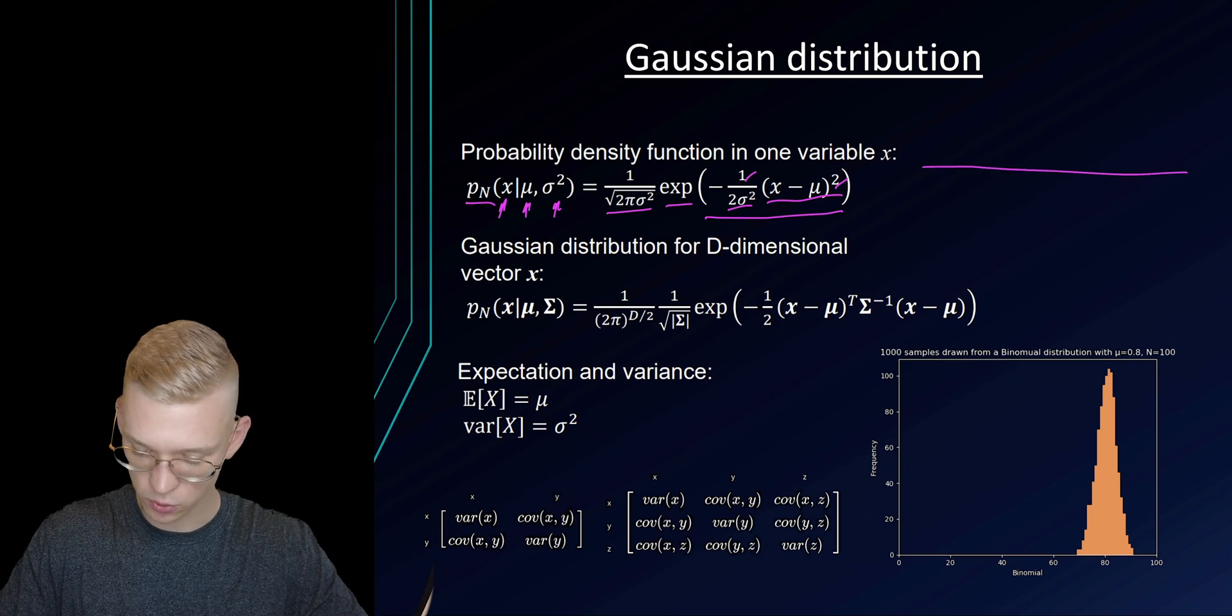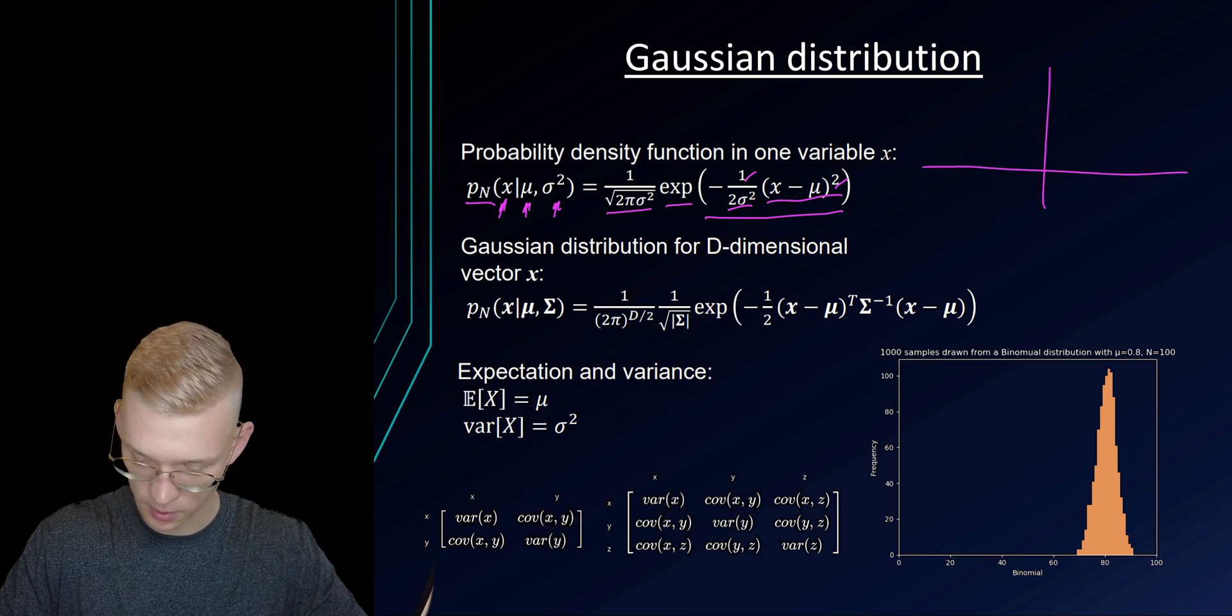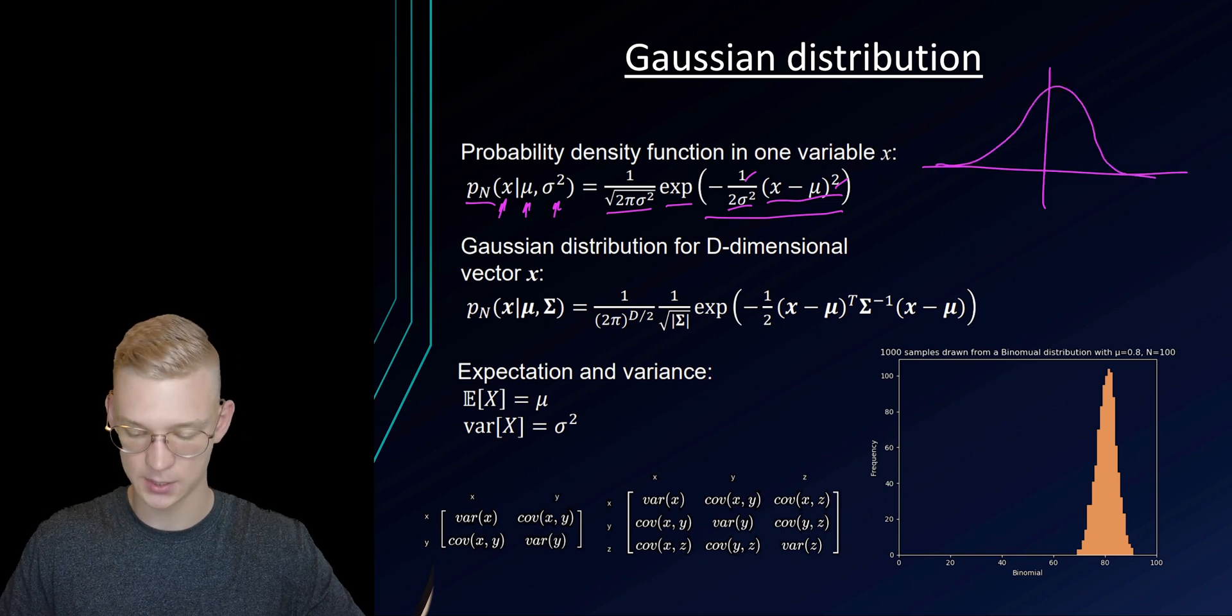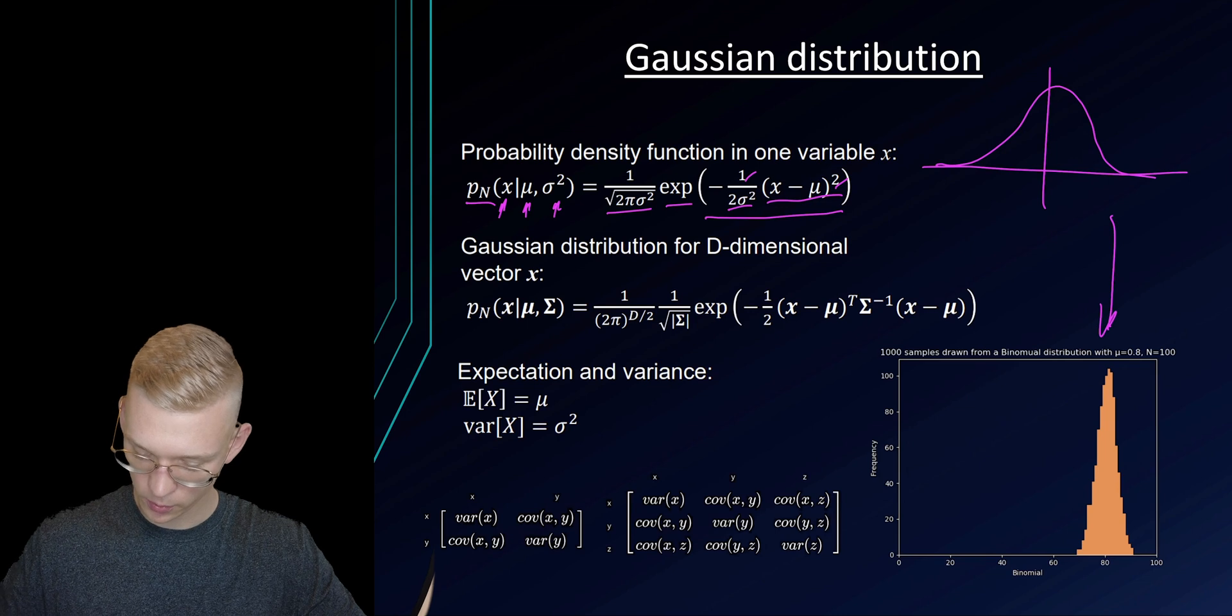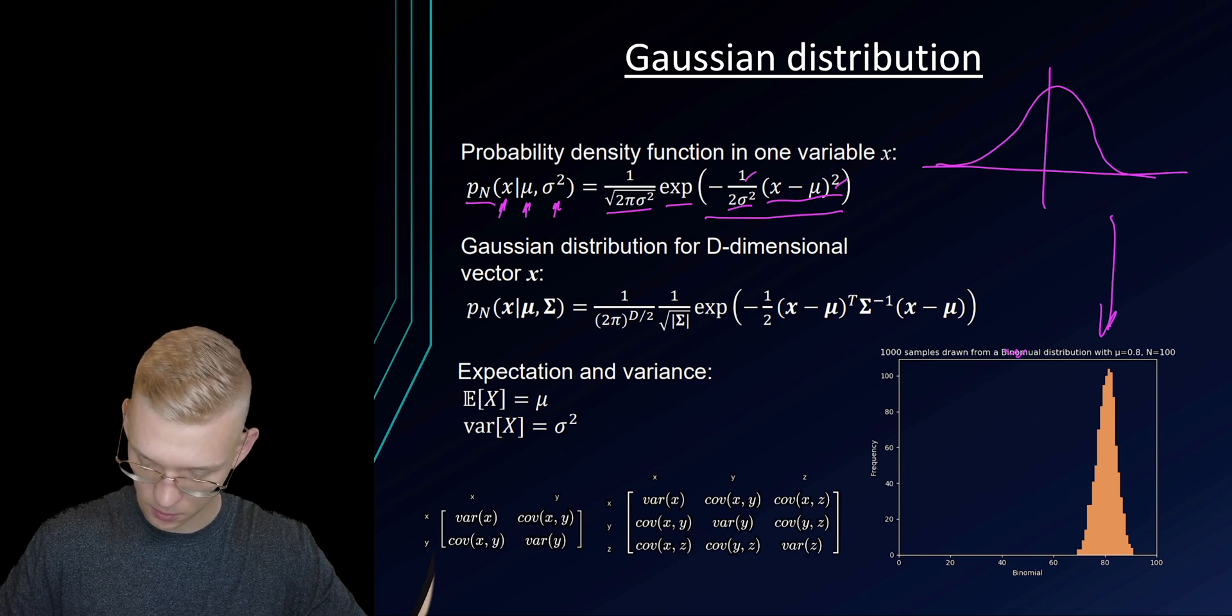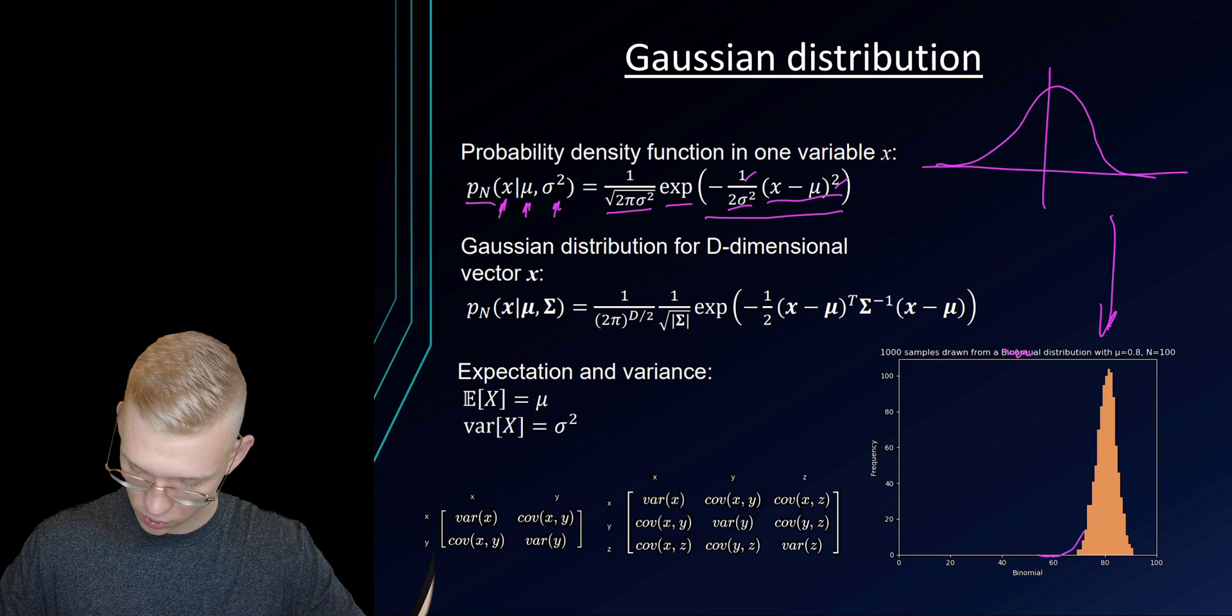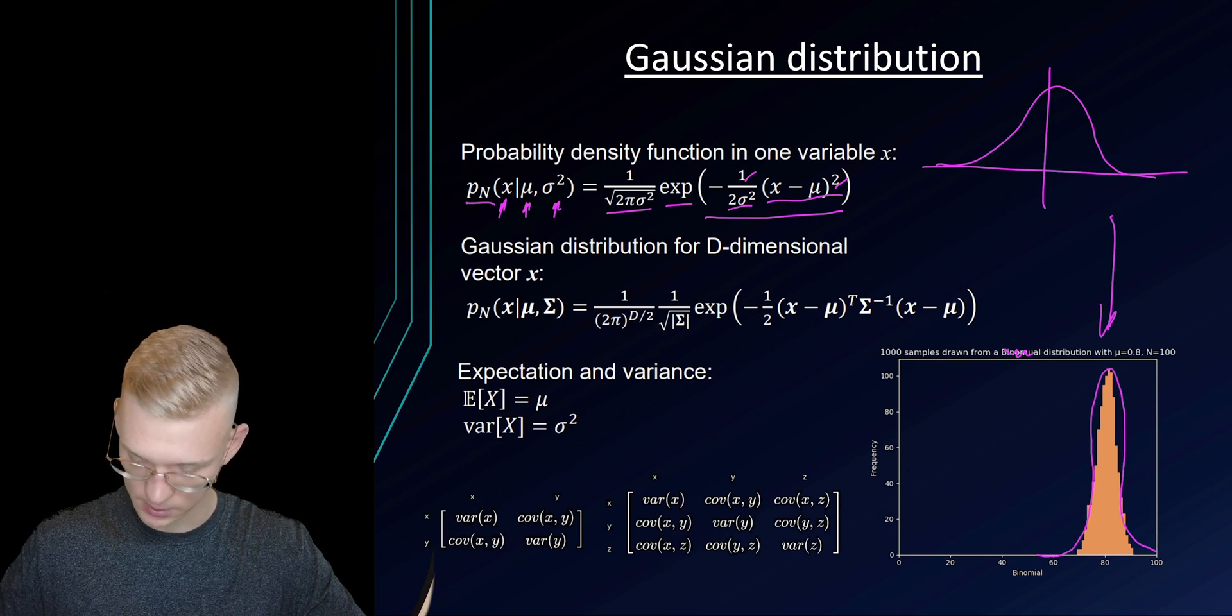So we will see a distribution if it's centered around 0 that looks like this. If it is not centered around 0, the Gaussian distribution will also look like this.